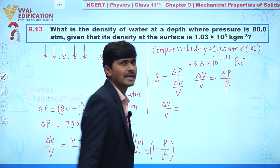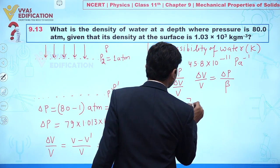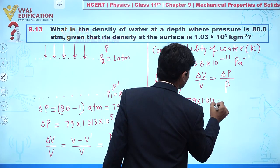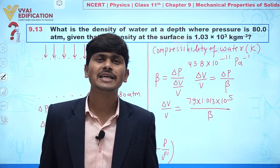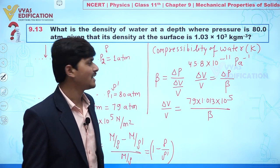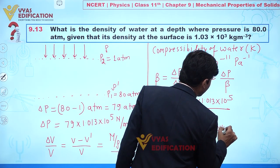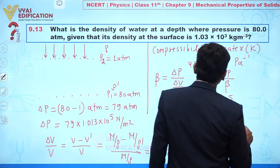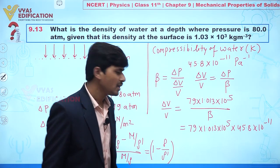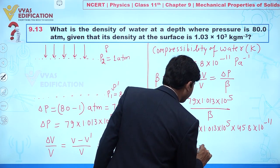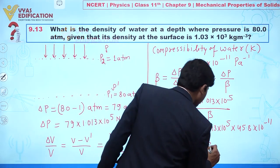Fractional change in volume = ΔP / B = 79 × 1.013 × 10⁵ / B. Since 1/B equals compressibility, we multiply by 45.8 × 10⁻¹¹. So ΔV/V = 79 × 1.013 × 10⁵ × 45.8 × 10⁻¹¹.